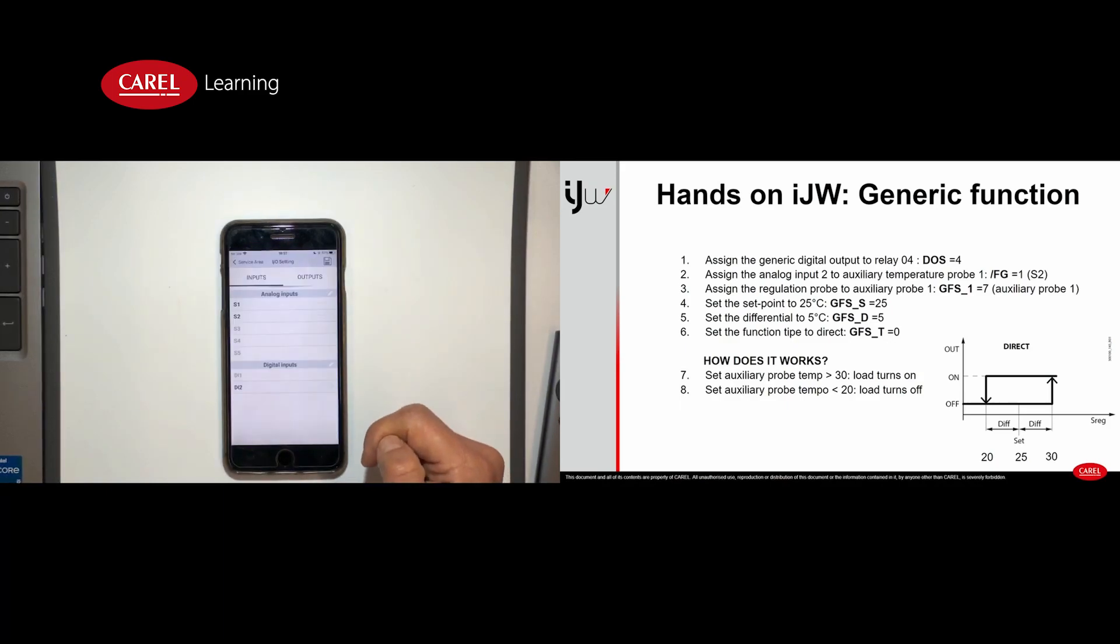Okay, the second step is to configure the analog input. In this case I will use the analog input number 2 assigned to the auxiliary temperature probe.